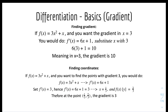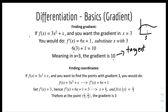For finding gradient with differentiation: if f(x) equals 3x squared plus x, and you want to find the gradient at x equals 3, you first differentiate f(x) to get 6x plus 1, then substitute x with 3: 6 times 3 plus 1 equals 19. So at x equals 3, the gradient is 19. This gradient is the gradient of the tangent at that point on the curve.